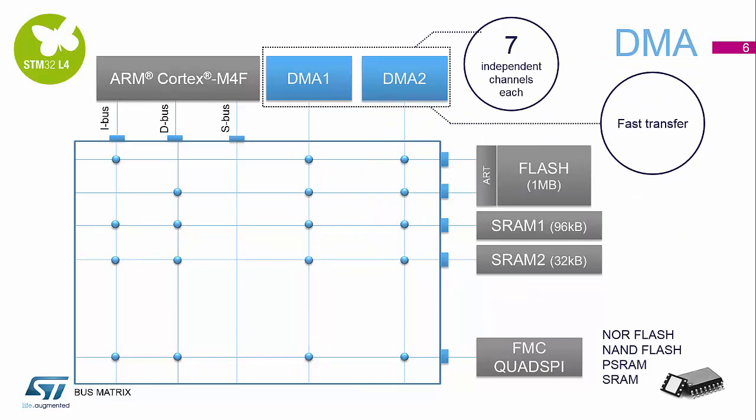As the Cortex-M4F is a master on the bus, we also have two more masters: DMA1 and DMA2. Each of these DMAs has seven independent channels inside the DMA structure, so that we can get fast transfers from peripherals into any of the RAM or other memory devices on the bus. As you can see from the bus matrix, there is a connecting dot between all the DMAs and all the different types of RAM, so any peripheral can send information into or out from all the different types of memory available in this STM32L4 device.